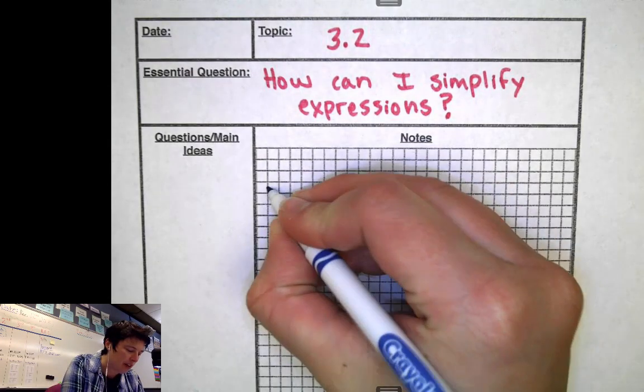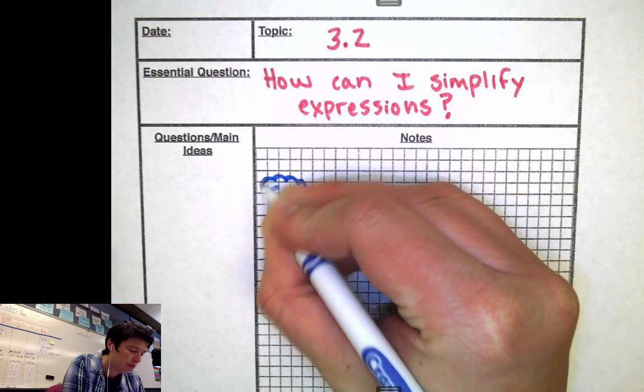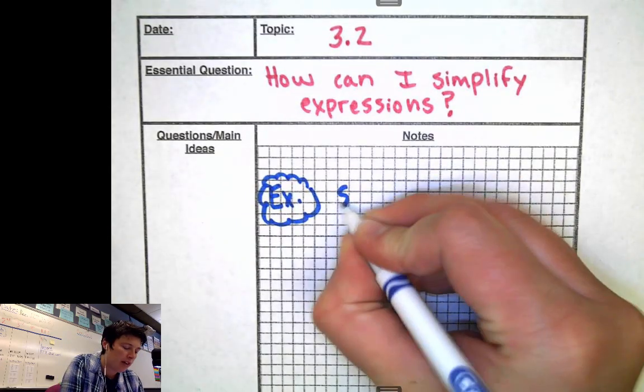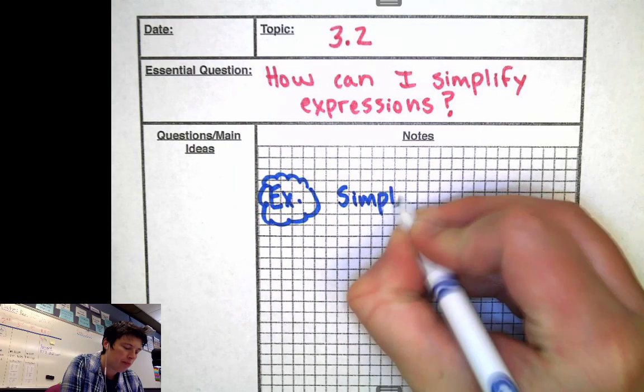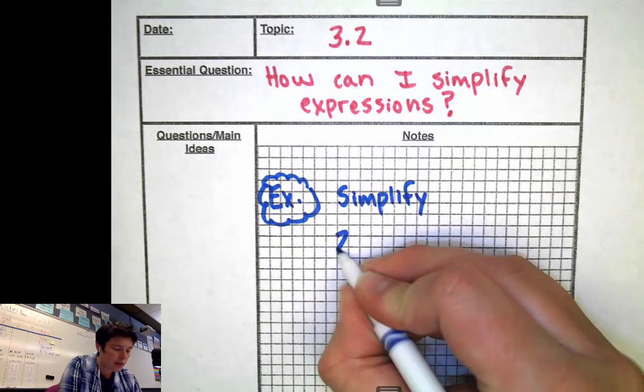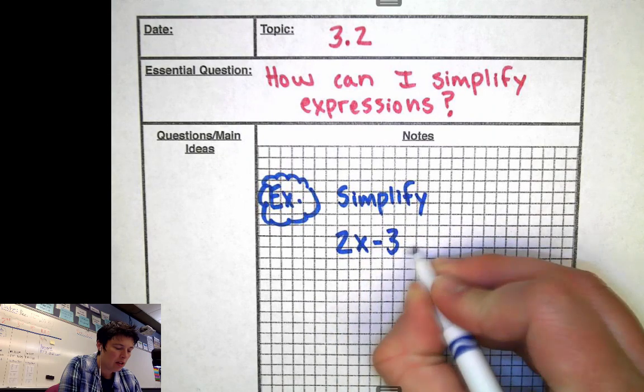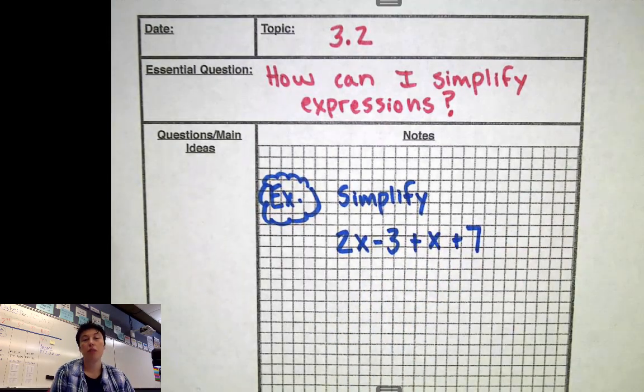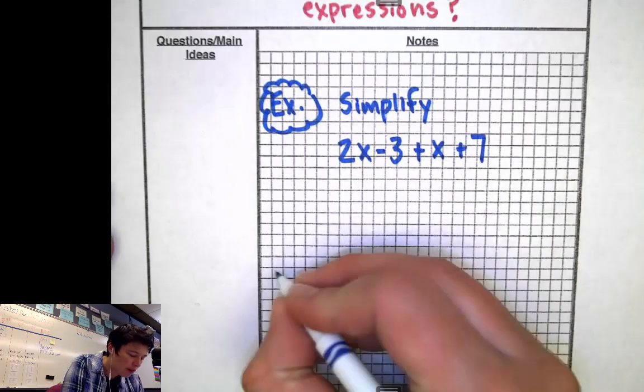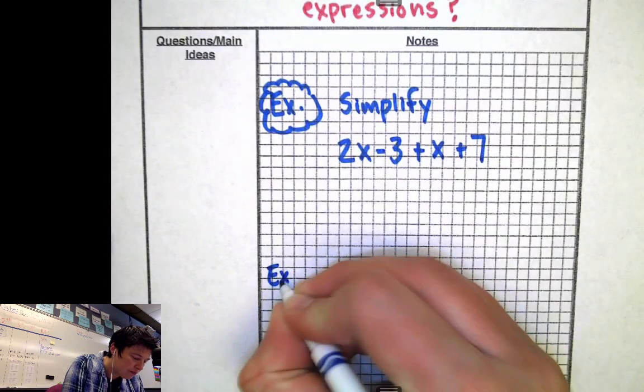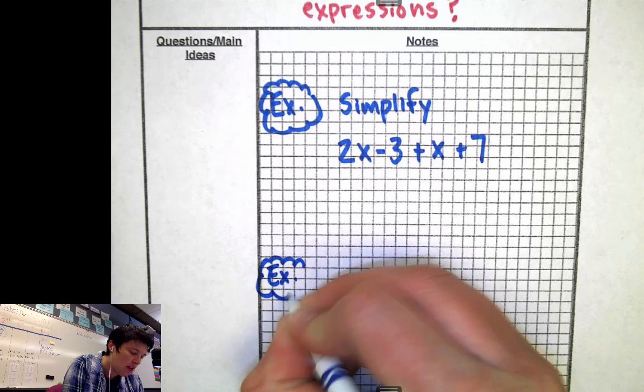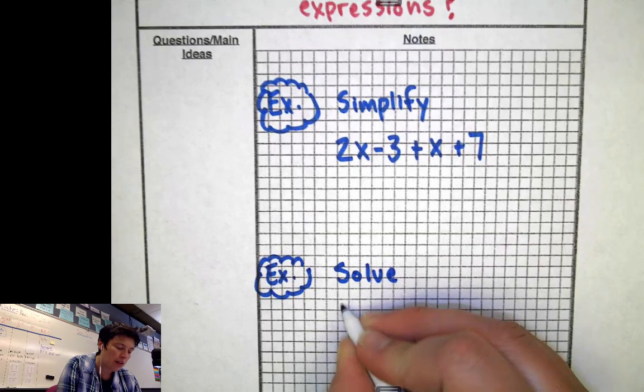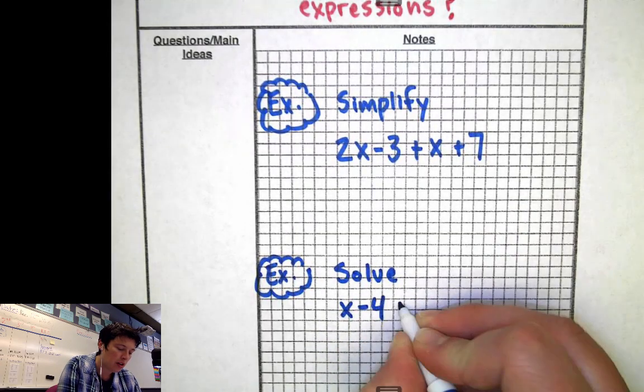Here is a simplify example. I'm going to write example. So I might say, can you simplify 2x minus 3 plus x plus 7. Now this is really different than if I said, let me put another example down here. This is different than if I said, solve x minus 4 equals 8.